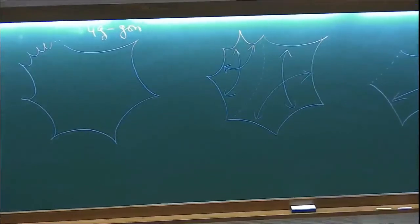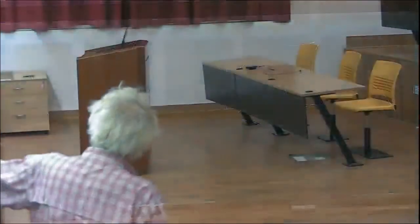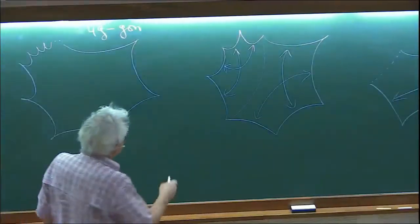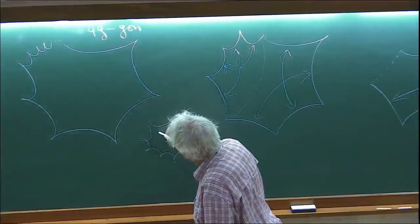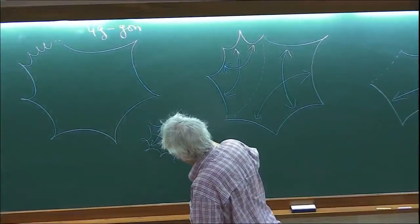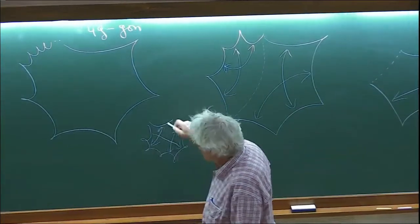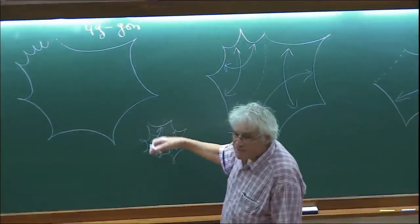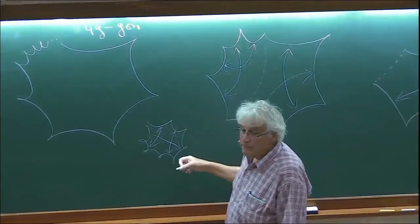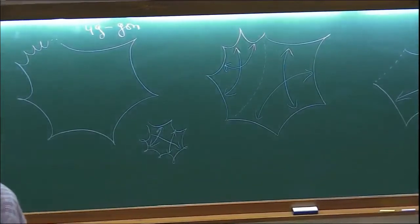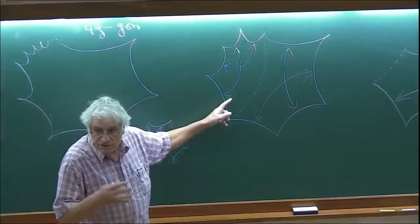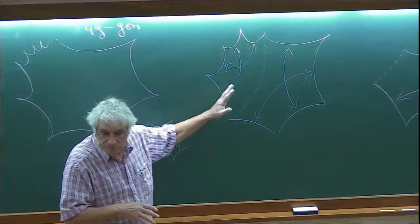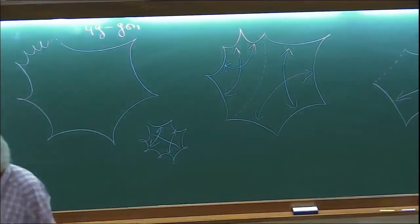One thing which is interesting: if you take a polygon with many sides and you identify at random by arrows drawn inside the polygon, all sides occupied, then at the end you will have a surface. It is not so easy to know what the genus is. But if you put only crosses, then the genus is the number of crosses you have put. So we have a way of making surfaces of any genus.